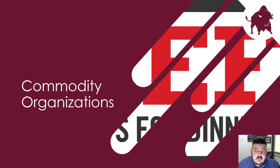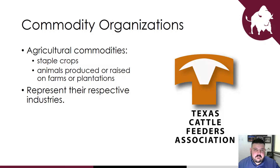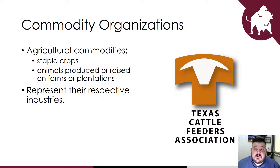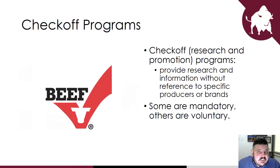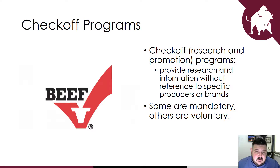Commodity organizations are another form of agricultural communications. Agricultural commodities — such as staple crops and animals produced or raised on farms or plantations — can be represented by a commodity organization. Most agricultural commodities like grain, livestock, and dairy provide a source of food for people and animals across the globe, and commodity groups represent those industries. A checkoff program, often referred to as a research and promotion program, promotes and provides research and information for a particular agricultural commodity without reference to specific products or brands — promoting beef, wheat, or sorghum as a whole rather than any individual company.